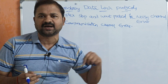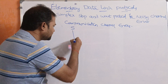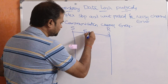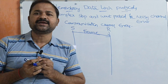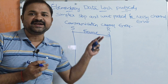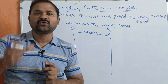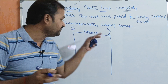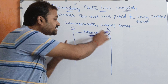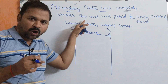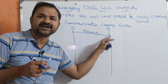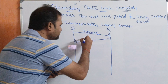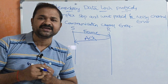Here we have two machines: the sender and the receiver. The sender sends a frame to the receiver. Every frame has a timer, so the sender waits for an acknowledgement only for that particular time period. If the time period expires, the sender retransmits the same frame. If the frame is received successfully, the receiver provides an acknowledgement to the sender.